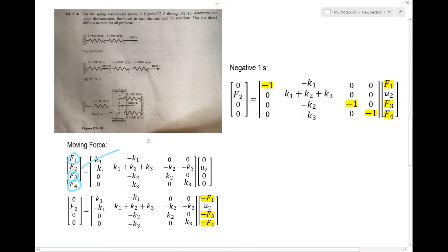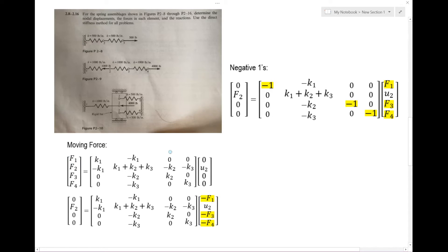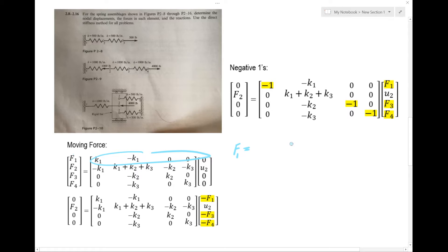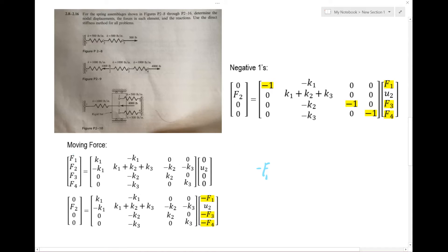How do you move the unknowns to the other side? I've taken F1 and moved it here. So F1 is equal to all this other stuff on the right. When I take this term and move it to the other side, I get this — and that's why that negative sign is there in case you're wondering.